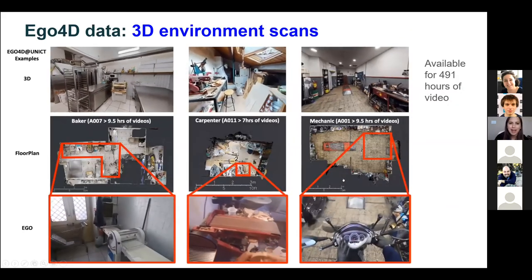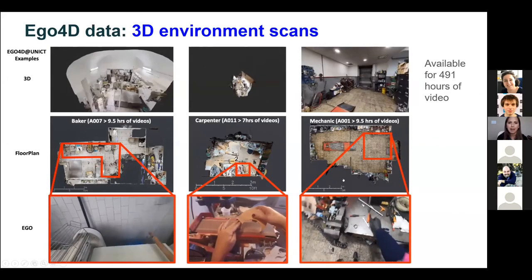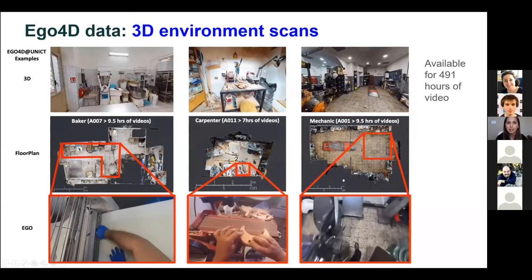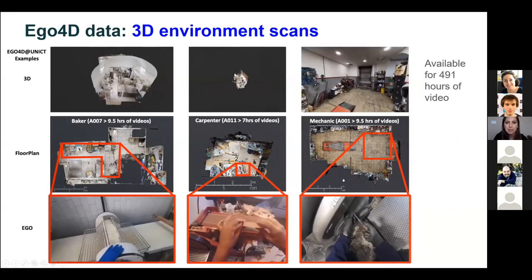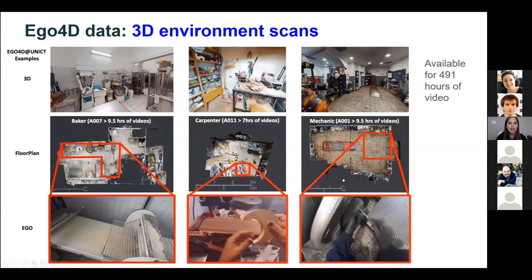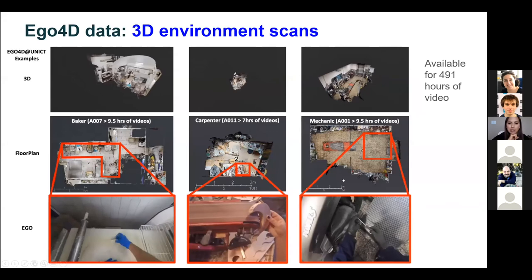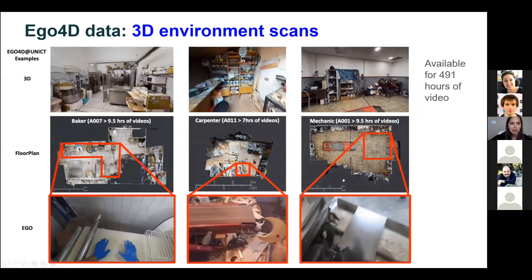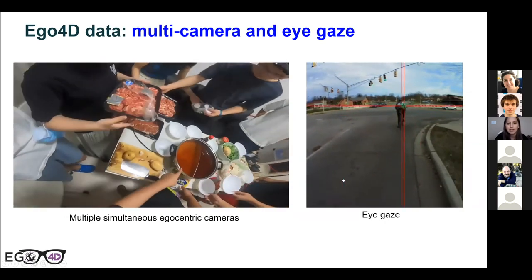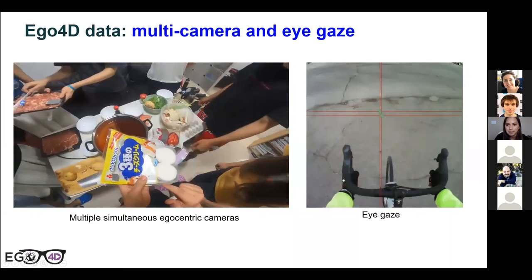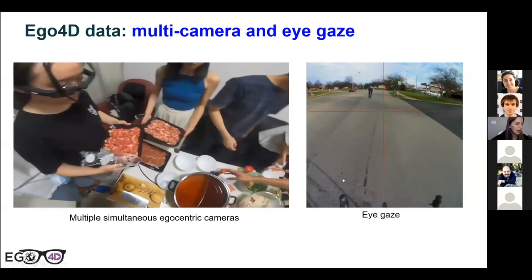Different pockets of the data have additional modalities beyond the RGB stream. First, 3D environment scans — almost 500 hours of video is associated with a full 3D scan of the environment where video takes place, linked to dynamic video from a head-mounted camera. Another modality involves multiple people simultaneously wearing cameras with synchronized video feeds. Eye gaze data is also available, offering other ways to explore first-person visual experience.